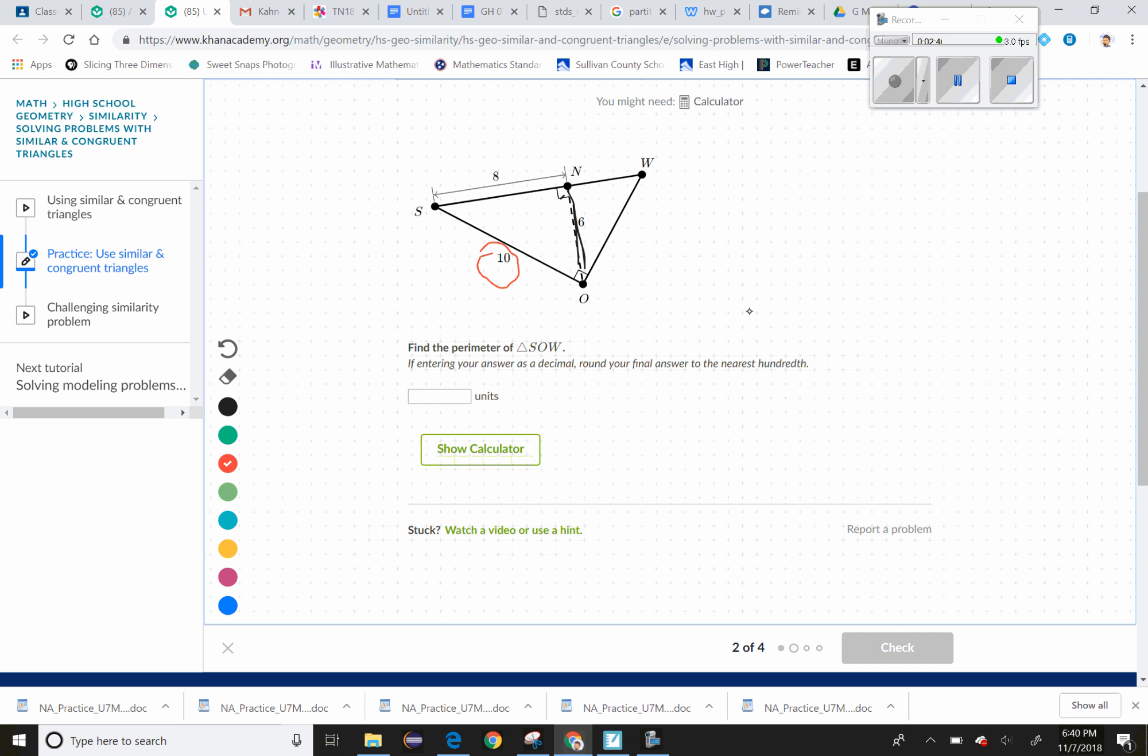We also could say—we call this X—that 6 is the geometric mean of X and 8. So this is going to be the way we can find W. I'm going to say 6 is the geometric mean of X and 8.